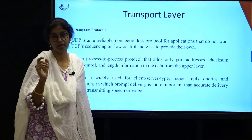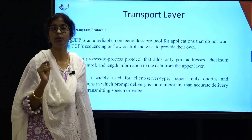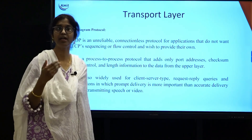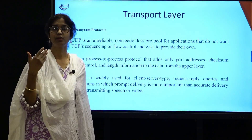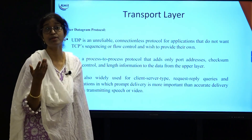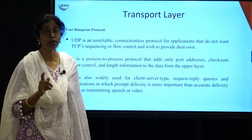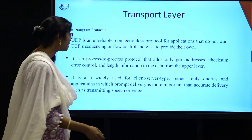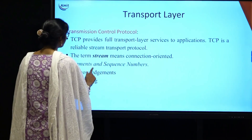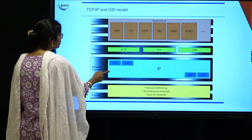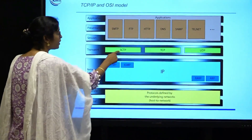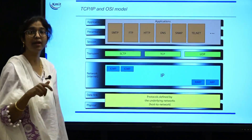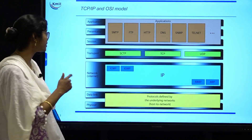UDP is basically used where we have a client-request type of connection with a request-reply protocol, where fast answers are preferred over accurate ones. Accuracy comes with TCP, but promptness and speed come with UDP. The third transport protocol is SCTP — Stream Control Transmission Protocol — which takes the capabilities of both TCP and UDP and combines them into a stronger protocol.